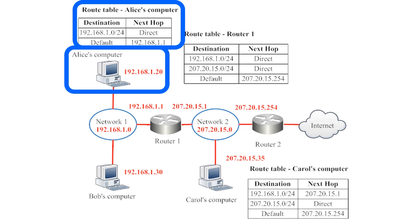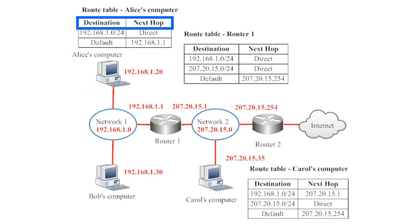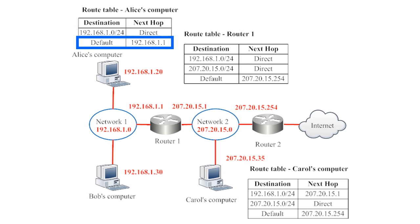Let's look at Alice's route table first. Alice's route table has two columns: the destination column and the next hop column. When Alice's computer wants to send information to an IP address in the destination column, it follows the directions in the next hop column. The first row tells us that information going to any IP address on network 1 will be sent directly to that IP address. For example, Alice's computer can send information directly to Bob's computer. But for any IP address not listed on the route table, Alice's computer will send information to the default next hop, which in this case turns out to be router 1.